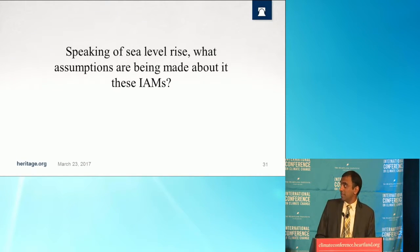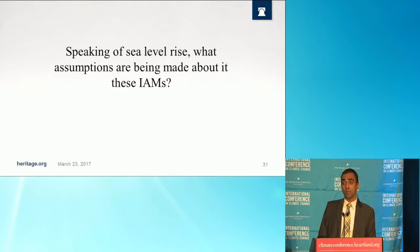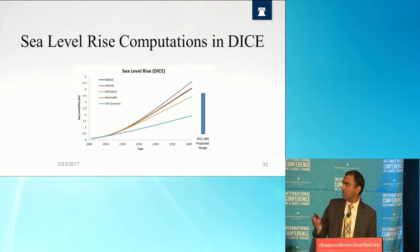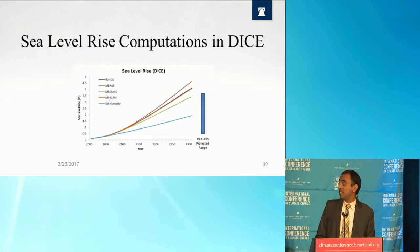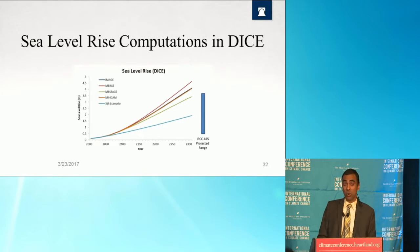Speaking of sea level rise, what assumptions are being made about it in these IAMs? My friends Pat Michaels and Chip Knappenberger wrote a blog about this two years ago, where I extracted sea level rise from the DICE model. The sea level rise assumptions being made in the DICE model in the year 2300 exceed the assumptions made by the IPCC AR5's projected range of sea level rise, which is quite disturbing.